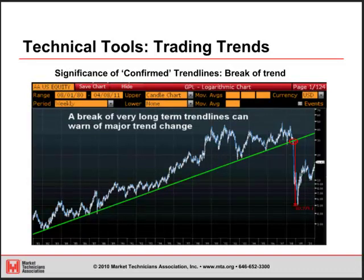Here's an example of one that actually does break. Looking at a chart of Alcoa going back about 30 years to 1981-82, we saw this low holding again and again — more than 10 touch points in this major uptrend holding across 30 years. At that point, you've got a confirmed trend that's held for a long period of time. Once it does break, that is a big warning that you're looking at a major trend change, and that's exactly what we saw as the stock erased effectively 20 or 25 years of progress in a relatively short period of time.